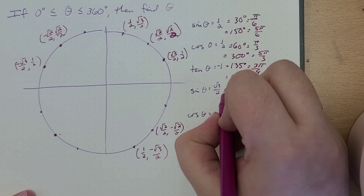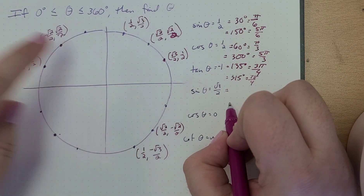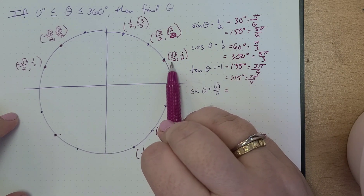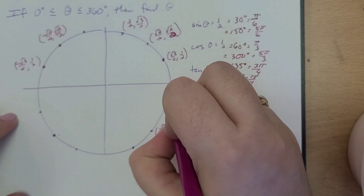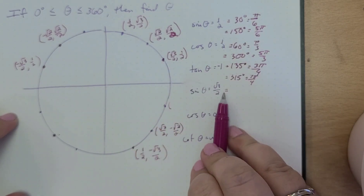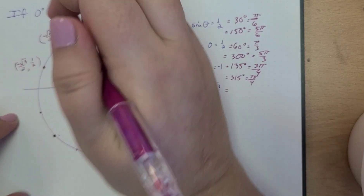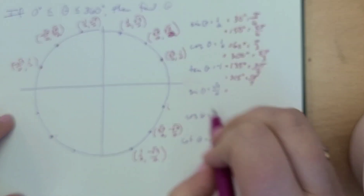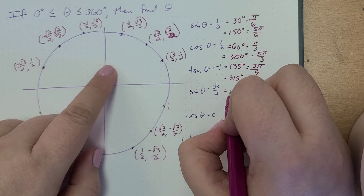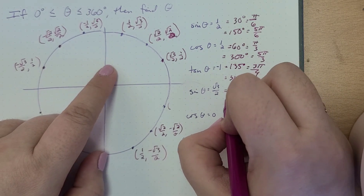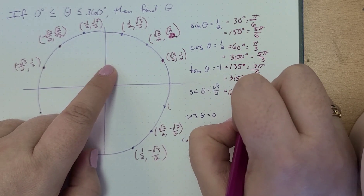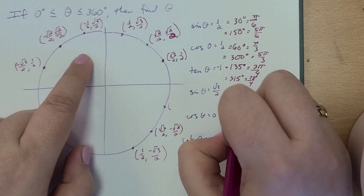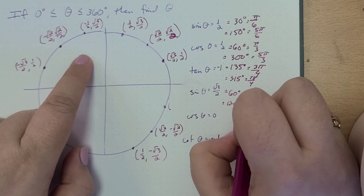Sine of theta is equal to √3/2. Radical three over two — sine would be right here and right here. So this is (−1/2, √3/2). That's going to be equal to 60 degrees, which we already said was π/3. And this is 120 degrees, which is equal to 2π/3.